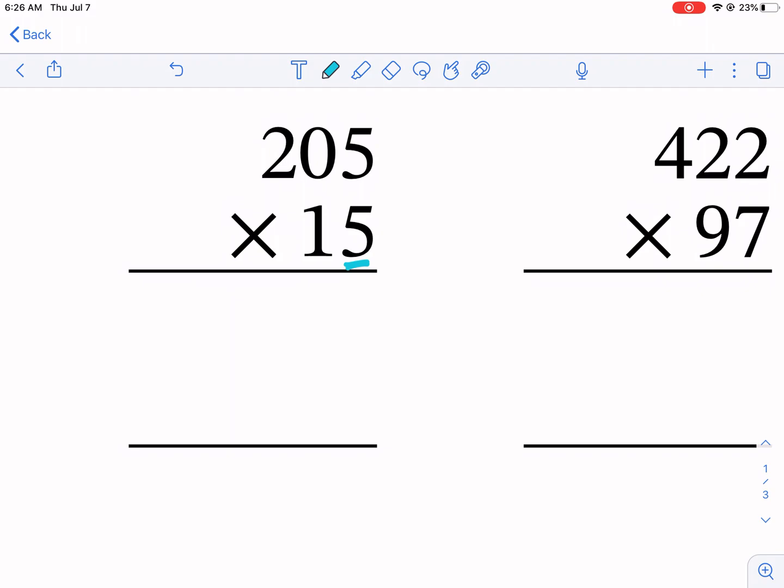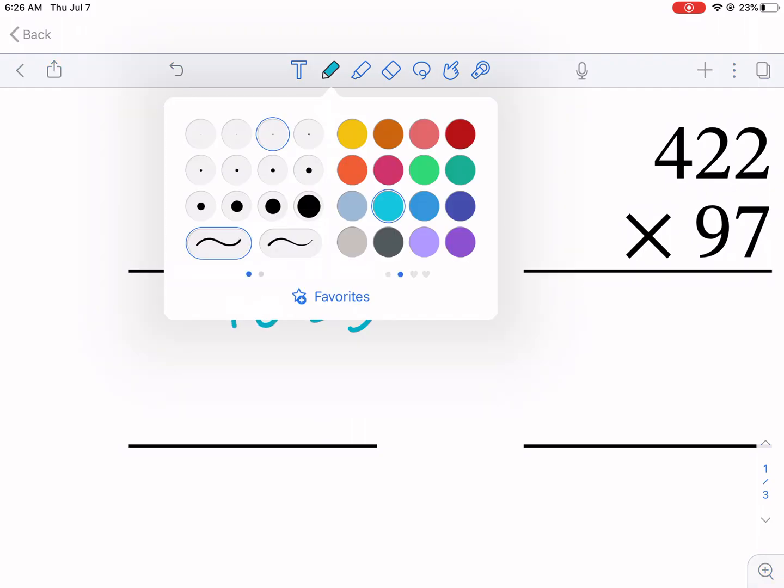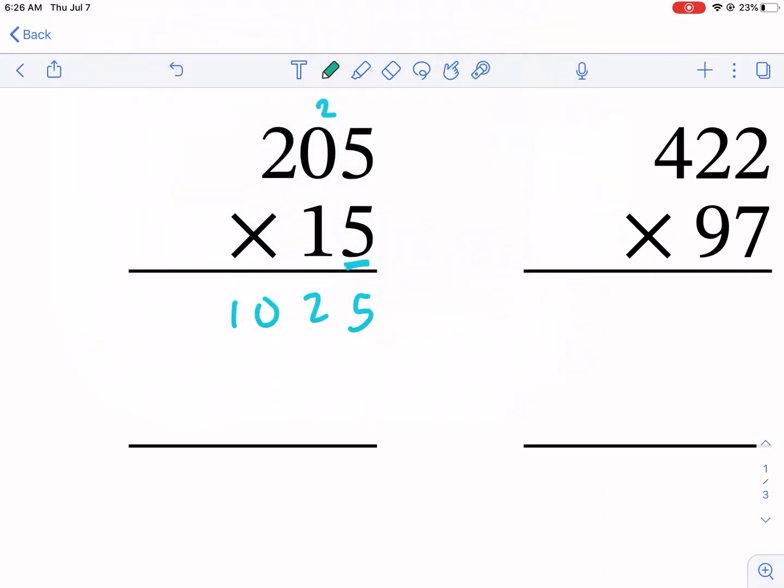First we need to start off with the one's place first - not the one's digit, one's place. So we have 5 times 5 is 25, carry the 2, and we get 2, and then we get 10.